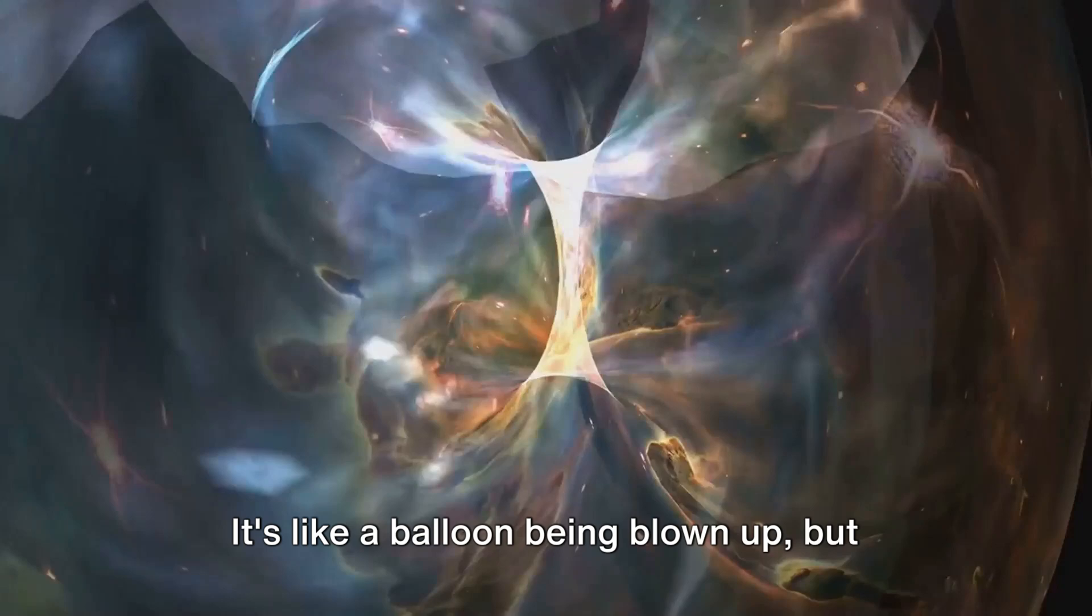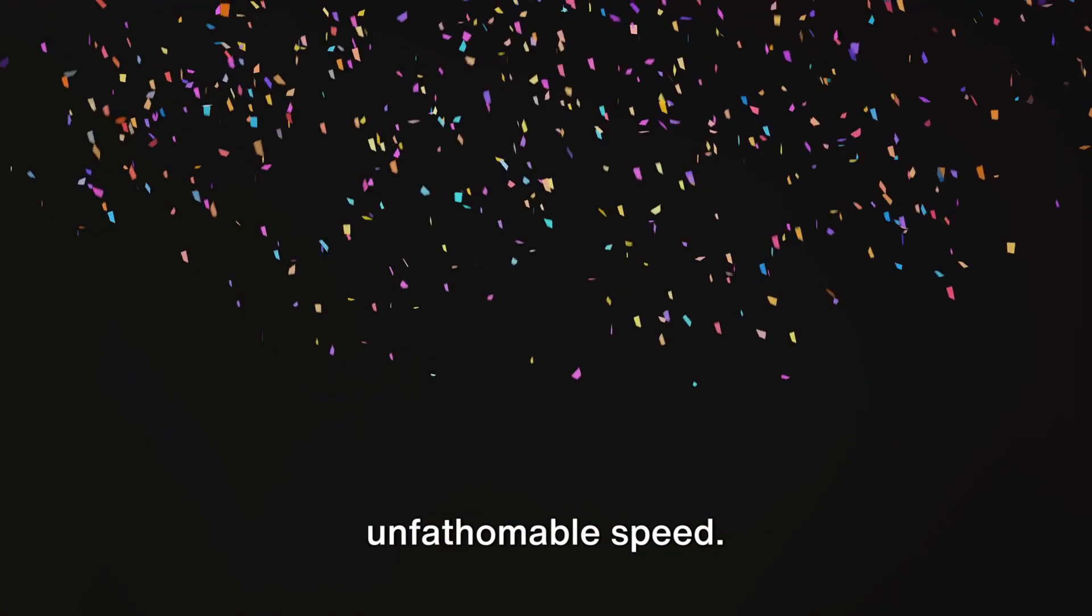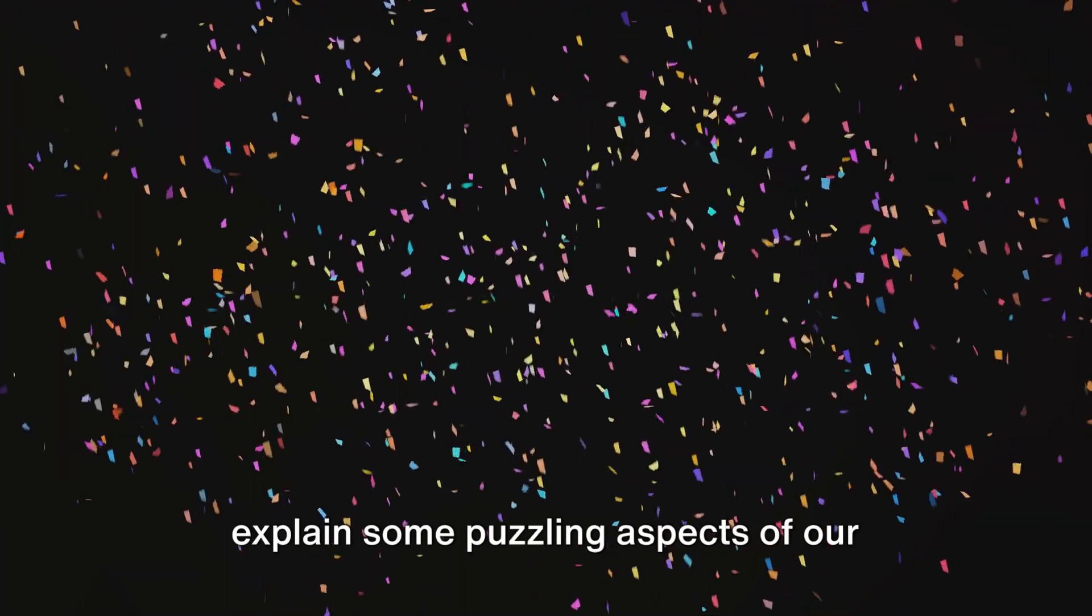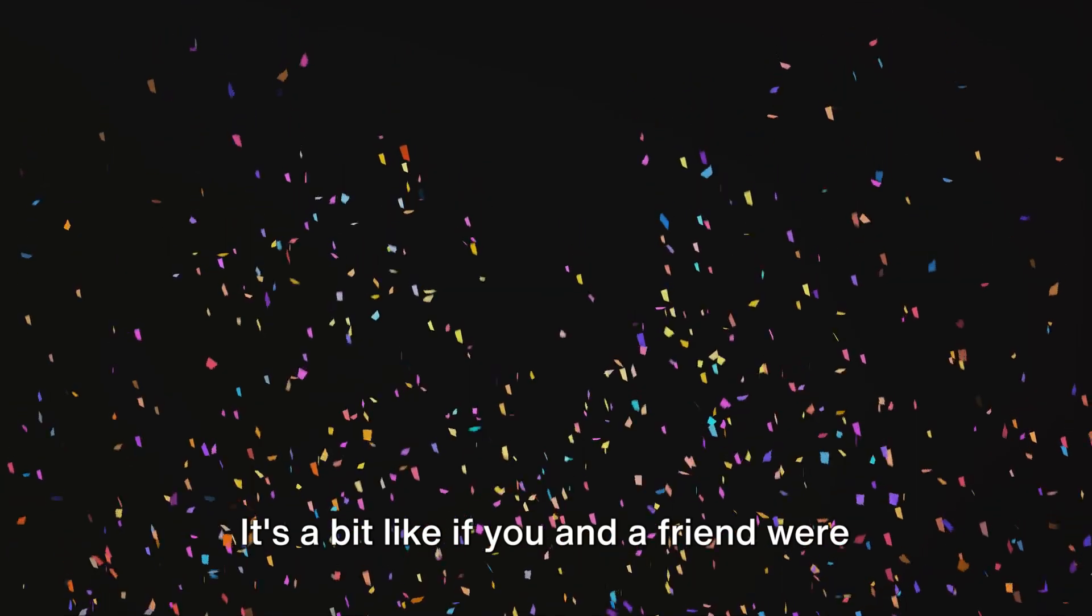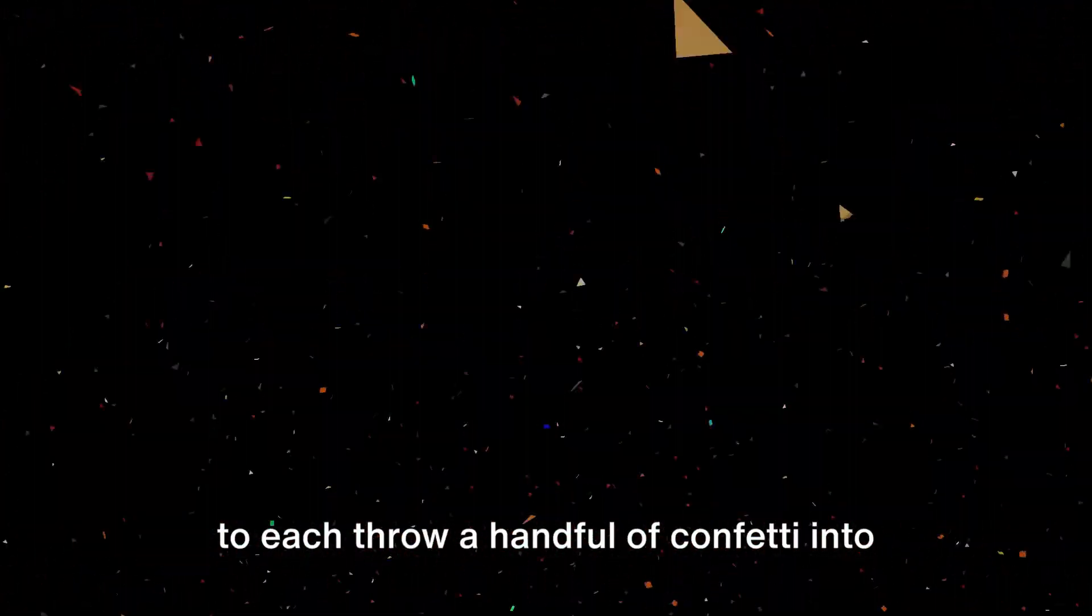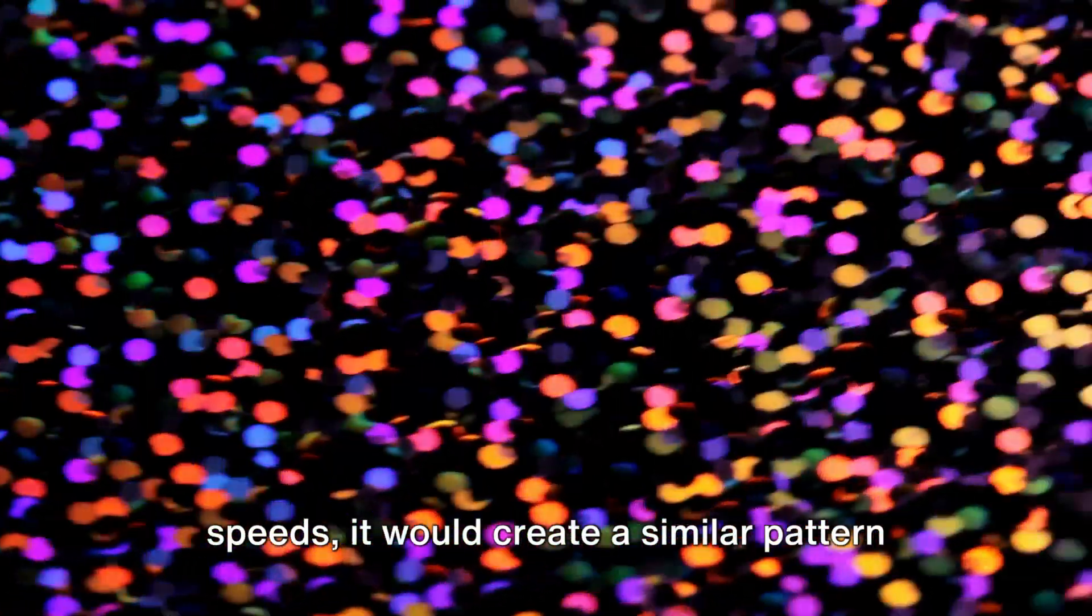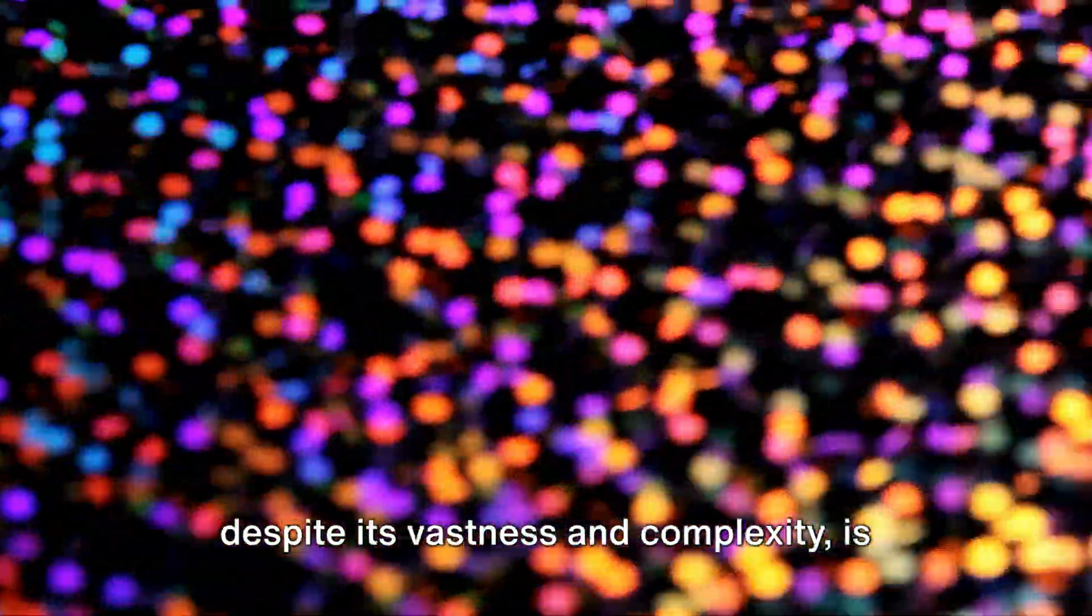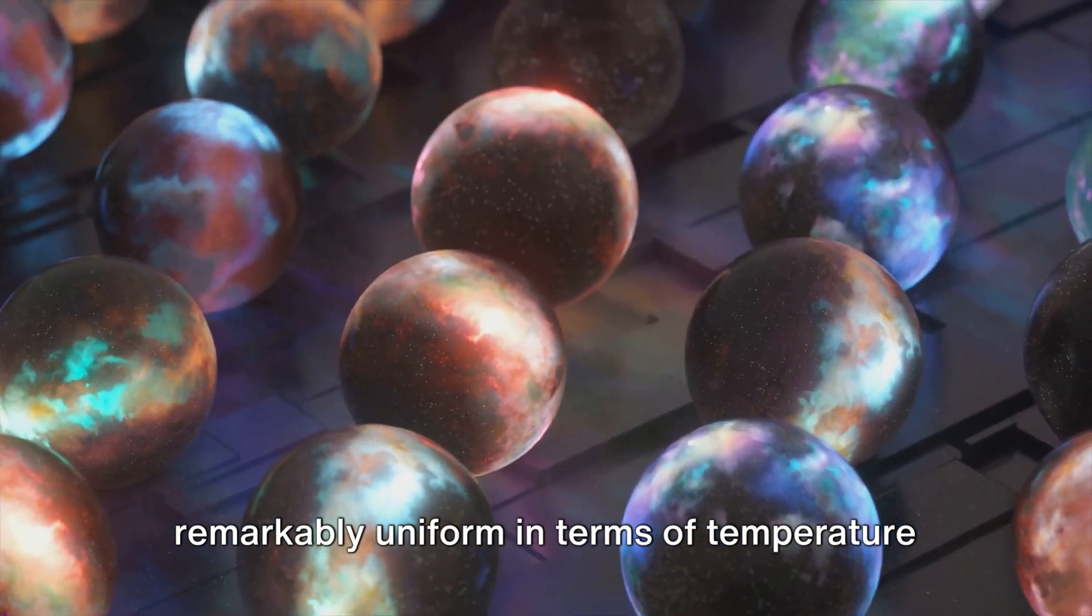It's like a balloon being blown up, but on an unimaginably grand scale and at an unfathomable speed. This theory was initially proposed to explain some puzzling aspects of our universe, such as its uniformity. It's a bit like, if you and a friend were to each throw a handful of confetti into the air, despite the confetti being thrown in different directions and at different speeds, it would create a similar pattern each time. Just like the confetti, our universe, despite its vastness and complexity, is remarkably uniform in terms of temperature and density.